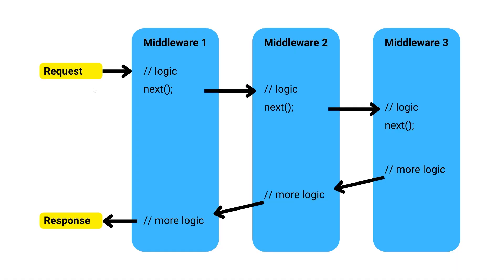You can see an example HTTP request pipeline in this image. We have our HTTP request at the top, and as it passes through the request pipeline, it goes through three distinct middlewares before producing a response at the end. The middleware itself acts as a decorator around the HTTP request, allowing us to introduce additional logic before or after executing the request. You can write a piece of code in the middleware that executes before the request, execute the request by passing it along the pipeline to the next middleware, and after the request completes, you can introduce additional logic before returning the response.